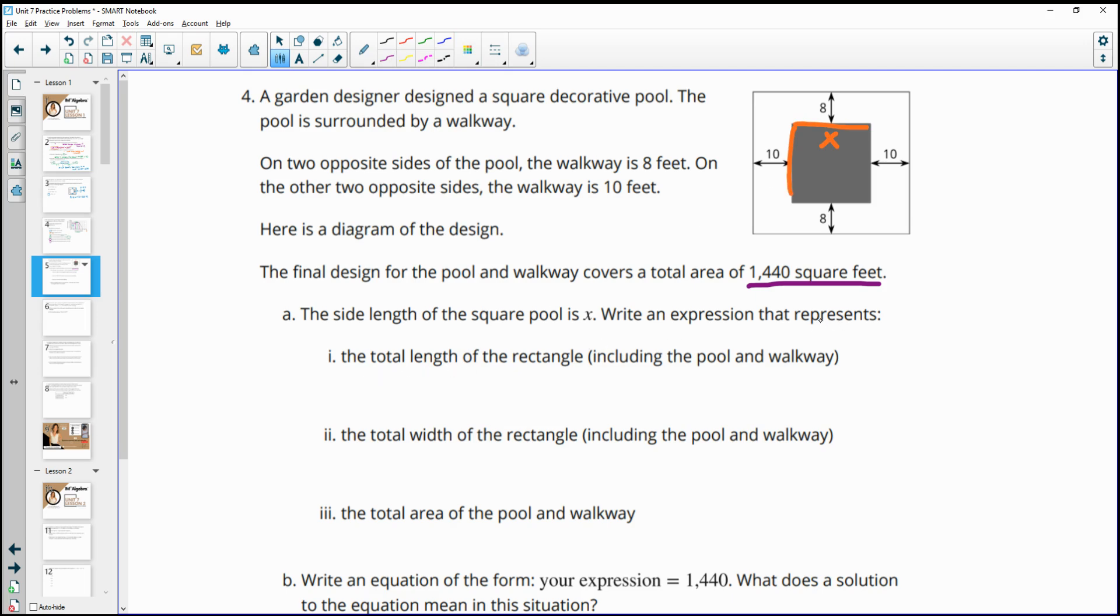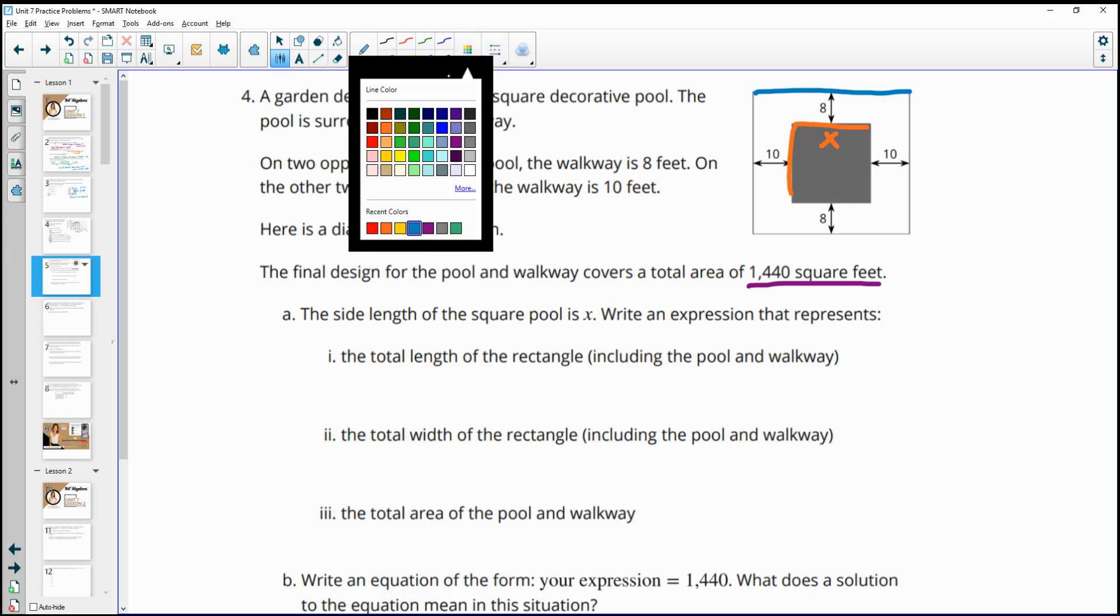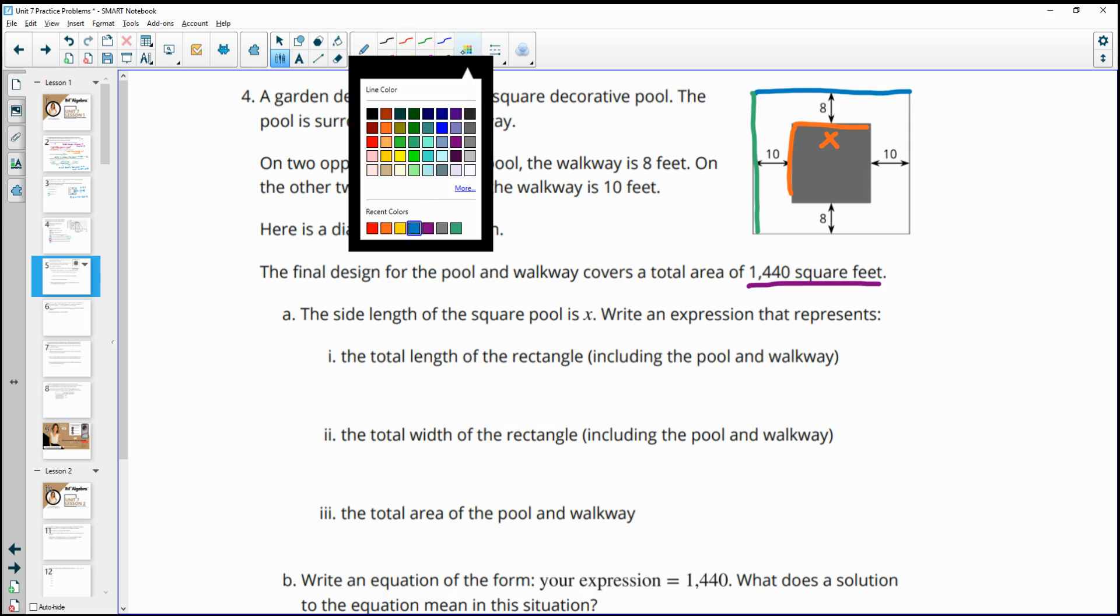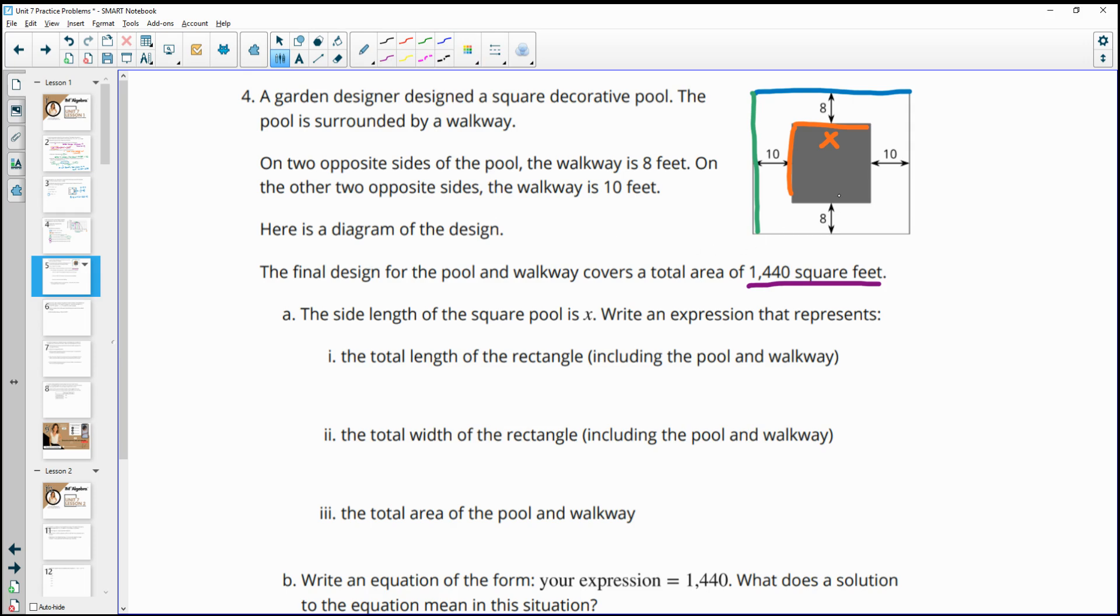And it says, write an expression that represents the total length of the rectangle, including the pool and walkway. So now we want to come up with a measurement for this length and this width, which are going to be different since it's a rectangle. And so part one is the total length and part two is the total width.